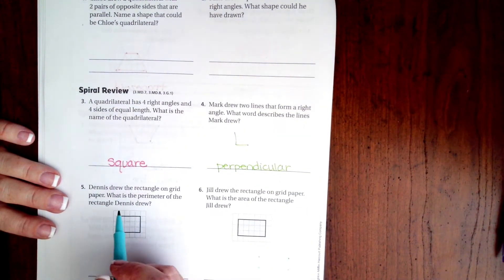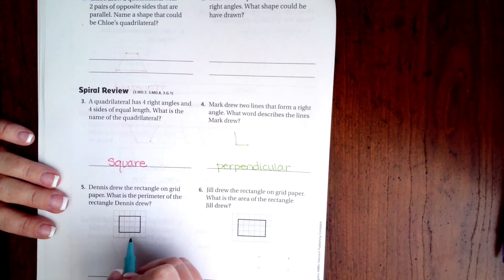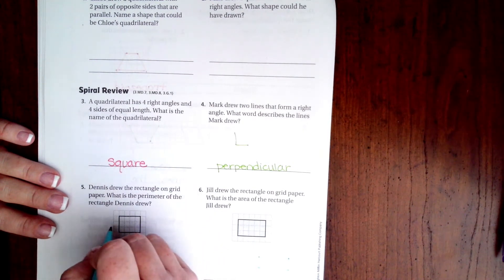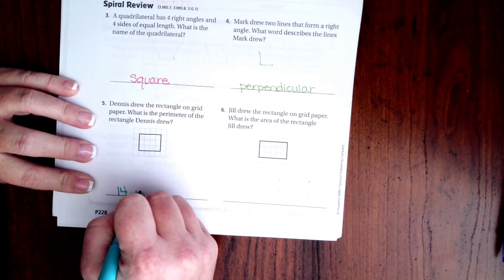Dennis drew the rectangle on grid paper. What is the perimeter? So it's 1, 2, 3, 4 across. So 4 plus 4 is 8. And then 1, 2, 3 down. And 3 plus 3 is 6. We have 6 plus 8. Well that's 14 units.